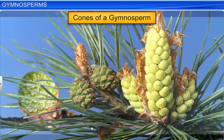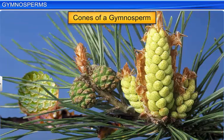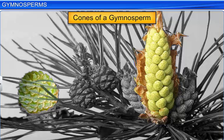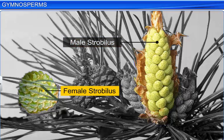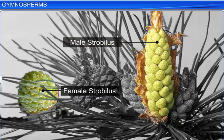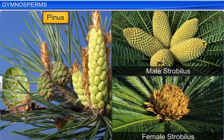The reproductive structure of a gymnosperm is called a strobilus or a cone. Gymnosperms have both male and female strobilus. Interestingly, the strobilus may be borne on the same tree, as seen in Pinus, or on different trees, as seen in Cycas.